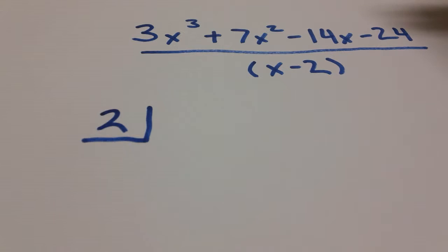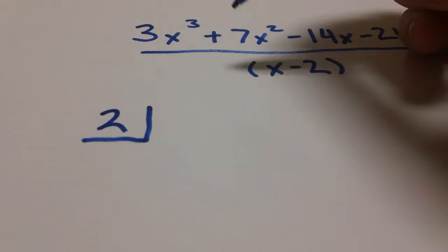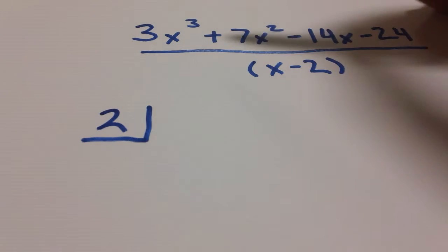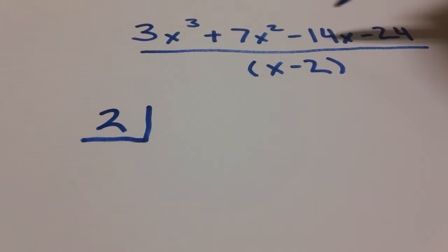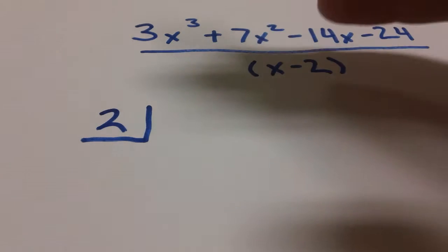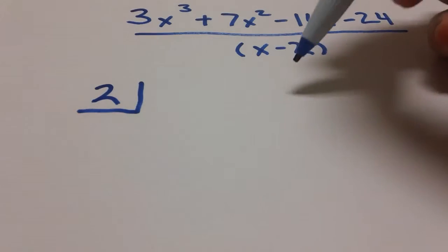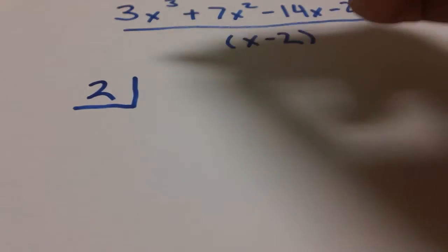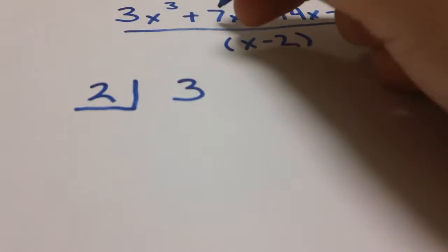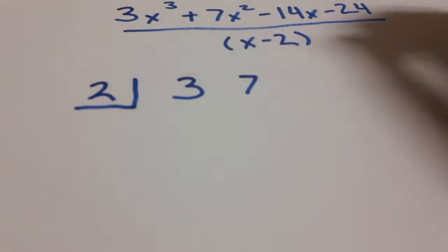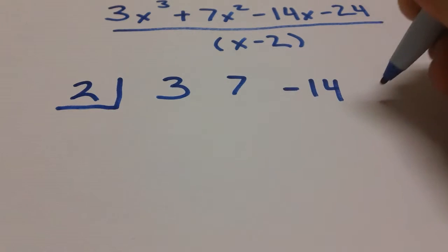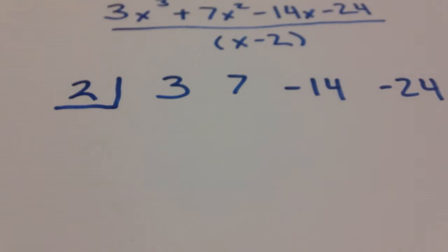And then we are going to focus on these coefficients. These numbers are really what we're going to be dividing, what we're going to be working with. So we want to take each of these coefficients and write them in a line next to our two. So we're going to start with 3, 7, negative 14, and negative 24.